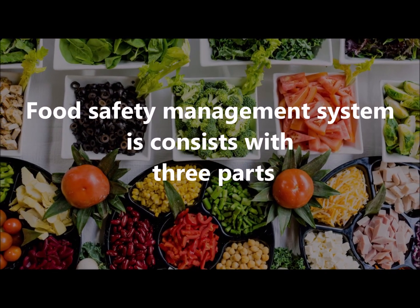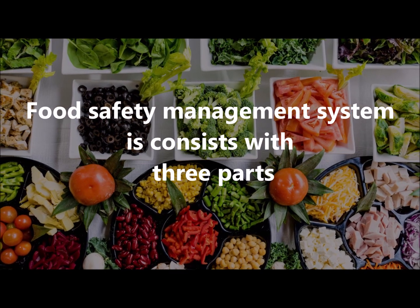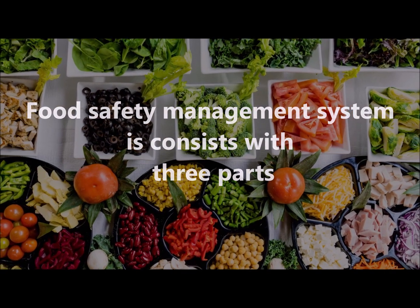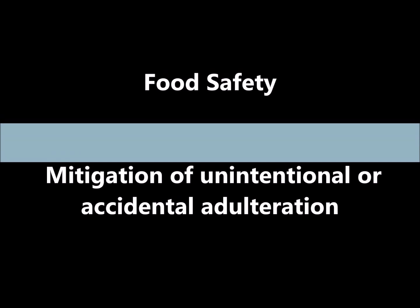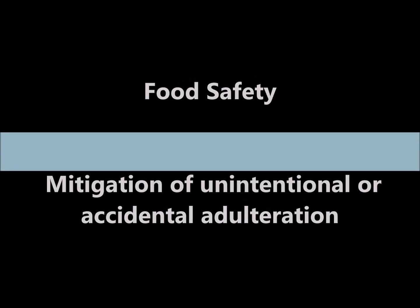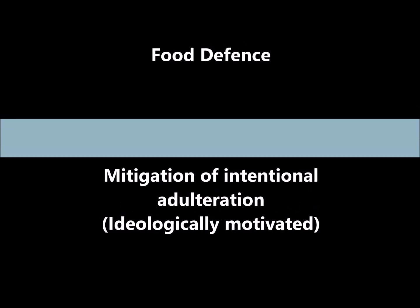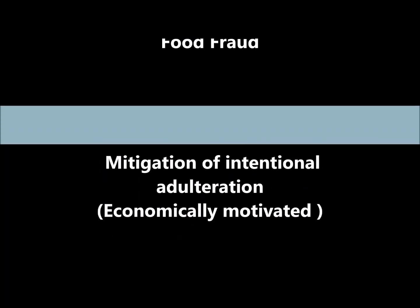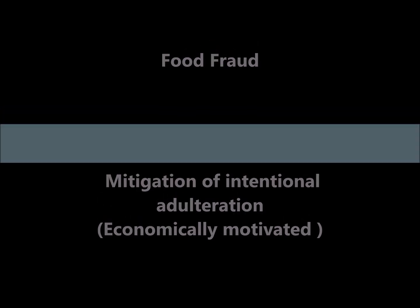As we all know, the food safety management system consists of three parts: food safety, which is mitigation of unintentional accidental adulteration; food defense, which is mitigation of intentional adulteration; and food fraud, which is also mitigation of intentional adulteration.